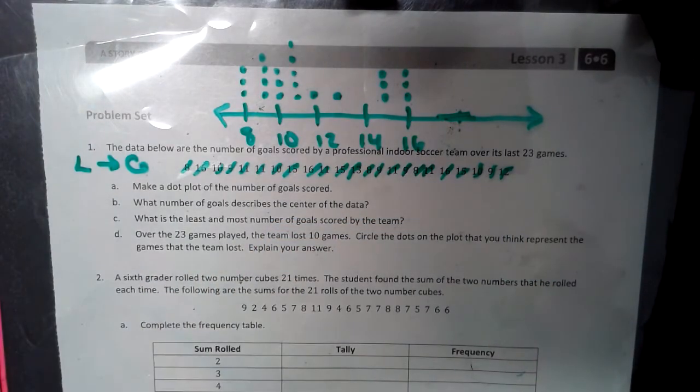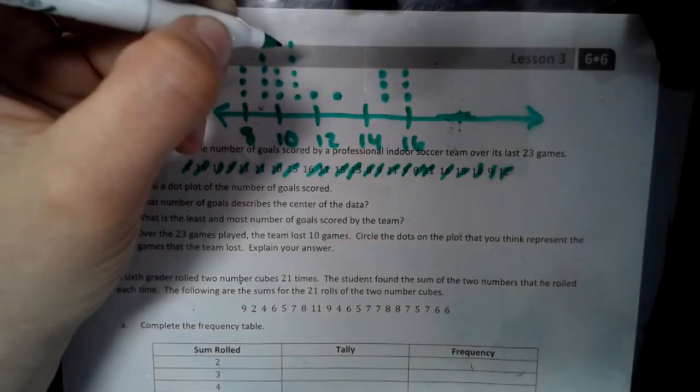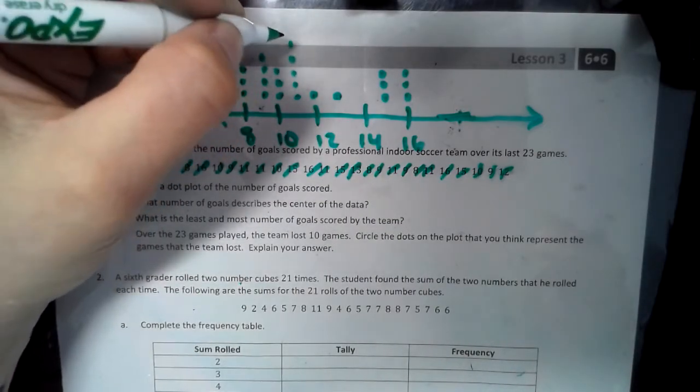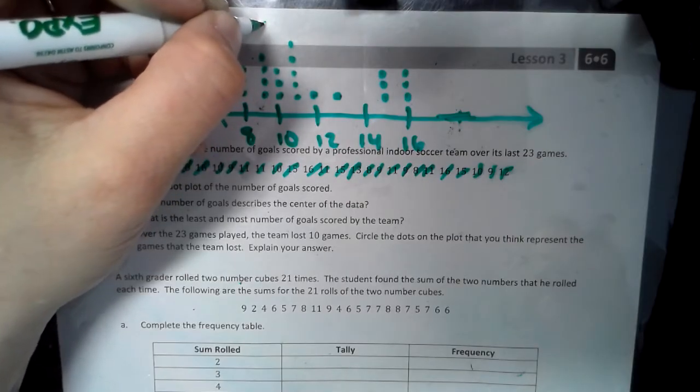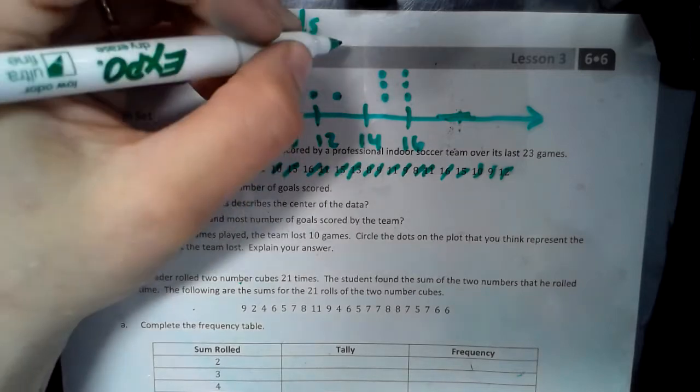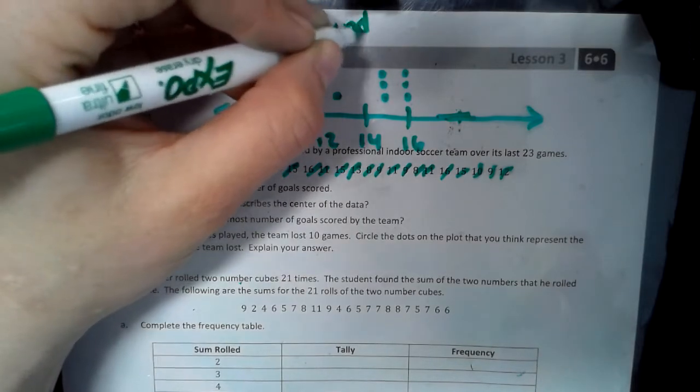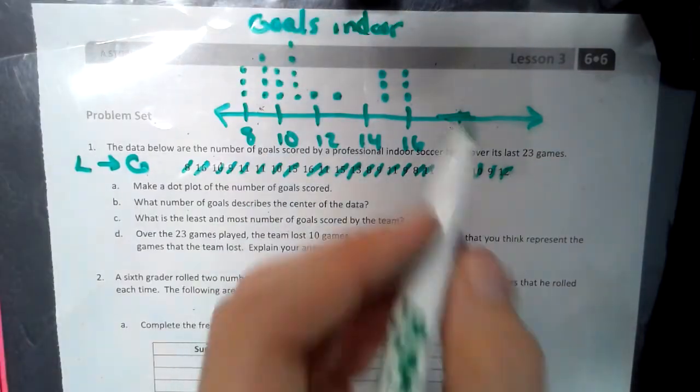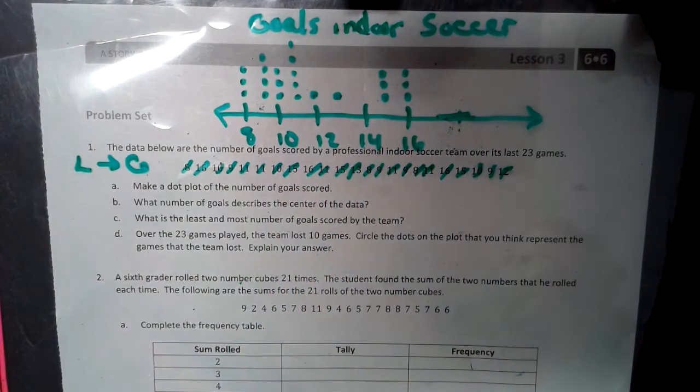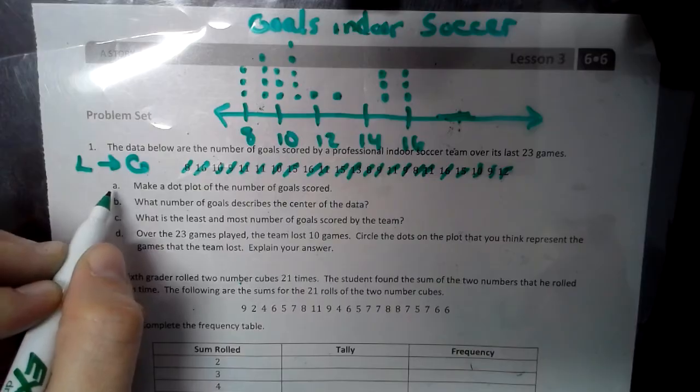Alright. So, that's how you make a dot plot. Then you need a title. And so, this is what you put at the top or underneath the line. Either is an acceptable thing to do. So, this is goals indoor soccer. So, there we go on that. We did A. Make the dot plot.